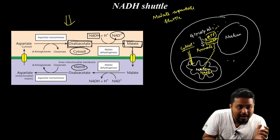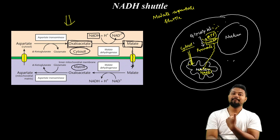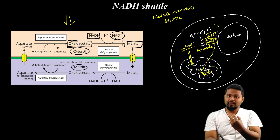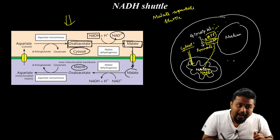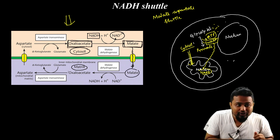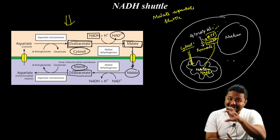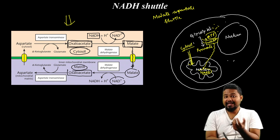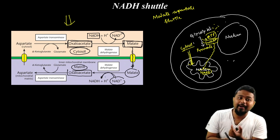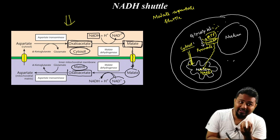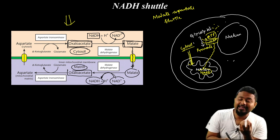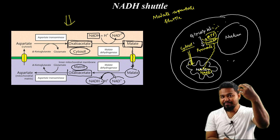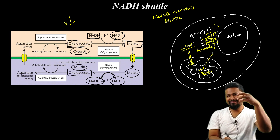The malate enters the mitochondrial matrix. The malate exchanges with oxaloacetate. The oxaloacetate exchanges with NAD positive, and the NAD positive takes the malate hydrogen ion and electron — the NAD changes to NADH.